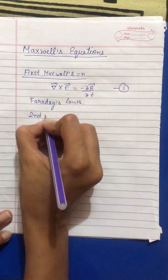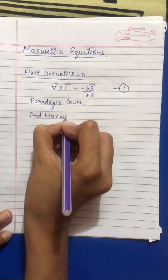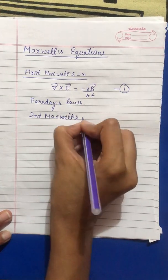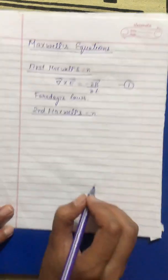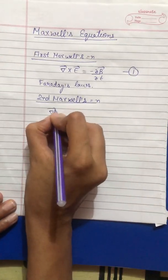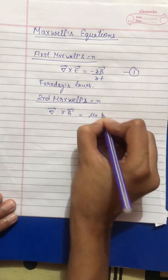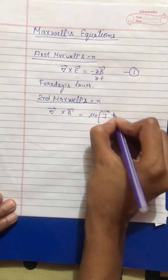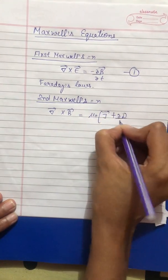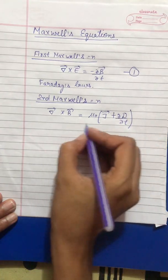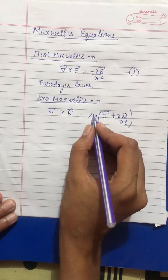Second Maxwell's equation is del cross B is equals to mu naught J, which is current density, plus curly D upon curly T. This is second Maxwell equations.